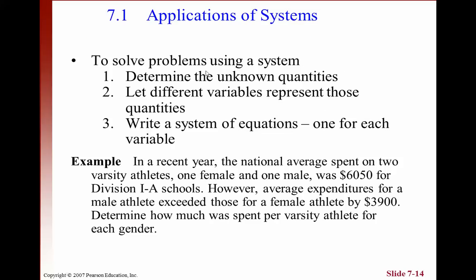And the last kind of problem we're going to do is an application of these systems of linear equations. Here's the three basic steps. Determine the unknown quantities, let different variables represent those quantities and write a system of equations, one for each variable. In this one, the national average spent on varsity athletes, one male and one female was $6,050 for division 1A schools. The average expenditure for male athletes was 3,900 greater than female. Determine how much was spent on varsity athletes of each gender.